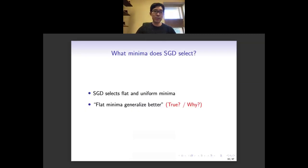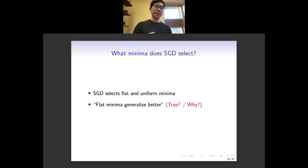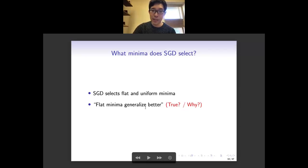A brief summary: we use the linear stability theory to show that SGD can select flat and uniform minima. There is a general observation believed by many that flat minima generalize better. So connecting these two, if we want to find better generalization, we can let SGD use a larger learning rate or smaller batch size so that it can pick flatter and more uniform minima, which may generalize better. We want to ask whether flat minima generalizing better is indeed true, and if so, why. We want to provide a theoretical picture from the multiplicative structure of neural networks.